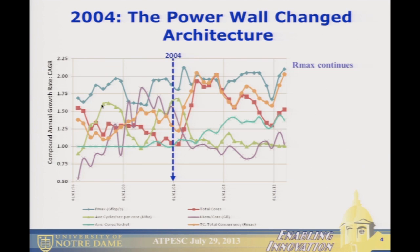This shows compound annual growth rates taken from the top ten of the Top 500 machines over time. The top curve is Rmax — the amount you grew every year — and as I said, that pretty much averaged about 2x per year. However, in 2004, clock rates went flat or down.